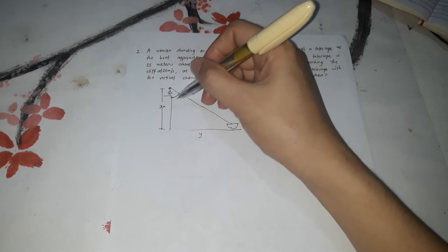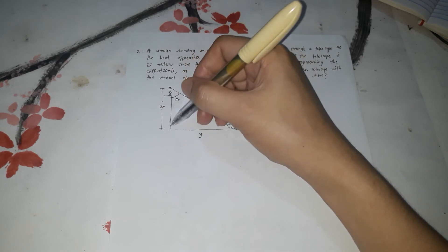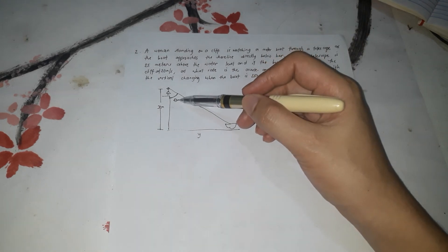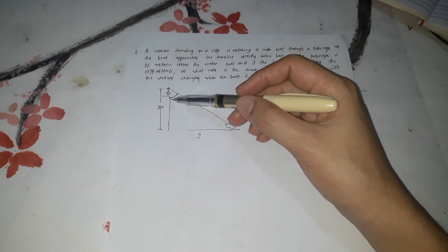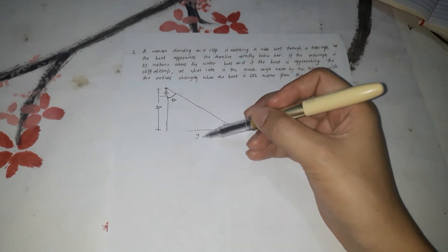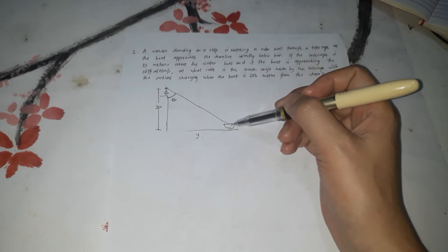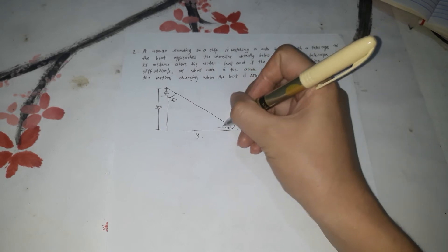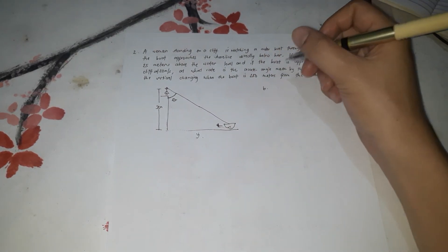Drawing the diagram: the woman is on the cliff, there's the water below, and the boat is approaching. The height of the telescope is 25 meters above water level. The angle theta is the acute angle between the telescope and the vertical. As the boat approaches, this angle decreases, so the rate should be negative.